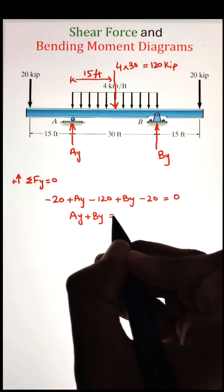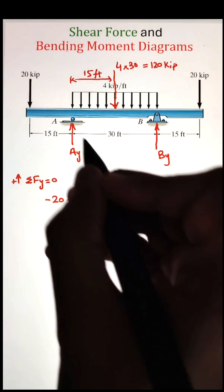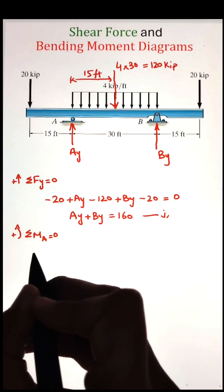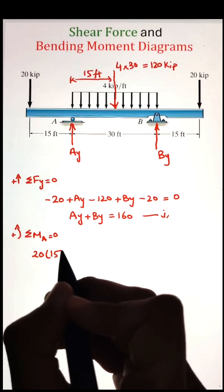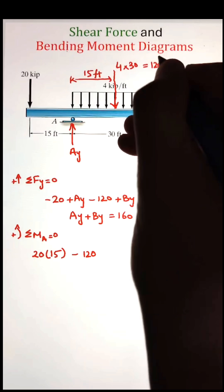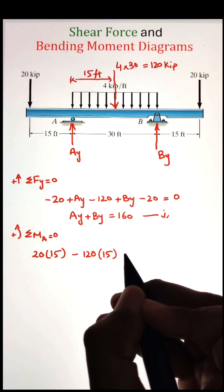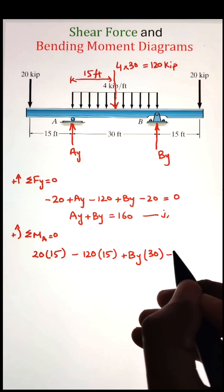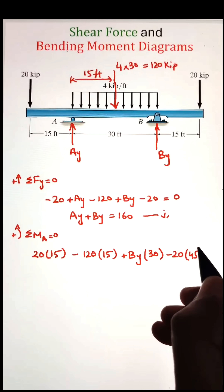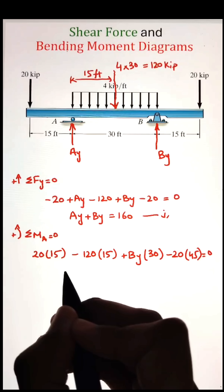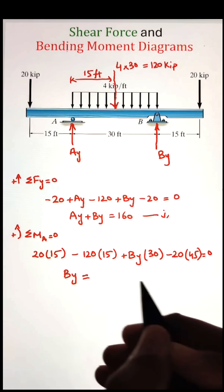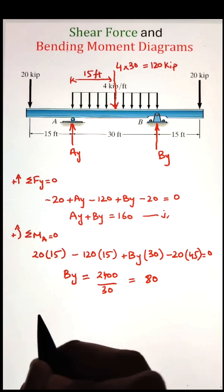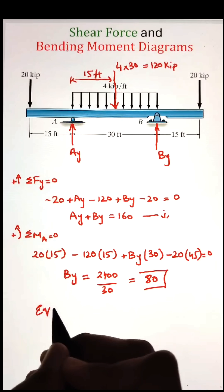Next, we can convert the distributed loading into a point load by multiplying 4 kips per foot times 30 feet, which gives us 120 kips. We can apply the equilibrium equation as summation of forces along the Y direction equals zero, adding all the point loads. This gives us AY plus BY equals 160. The second equilibrium equation, summation of moments at point A equals zero, gives us the value of BY as 80 kips. Plugging that into equation 1 gives us AY as also 80 kips.